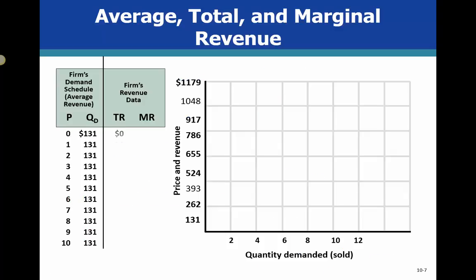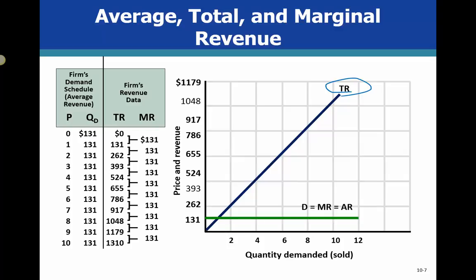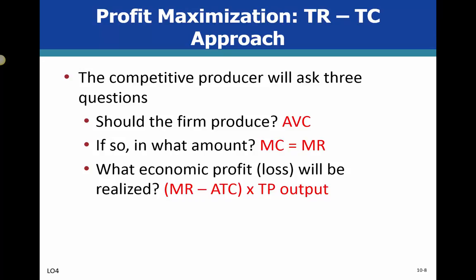Here's how it looks graphed out. We have our total revenue curve going up, and then our demand curve, marginal revenue, and average revenue — they're all the same horizontal line. The price per unit shown here is one hundred thirty-one dollars. That's how the graph maps out for a purely competitive market.